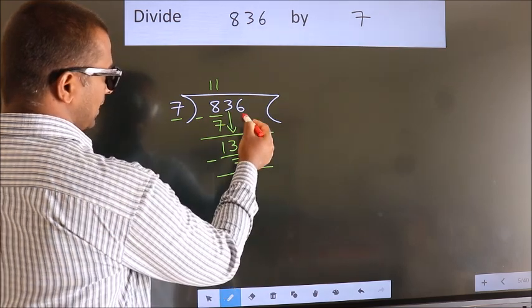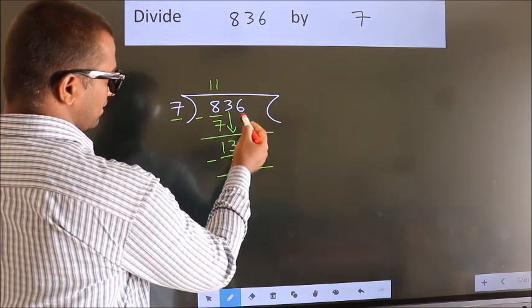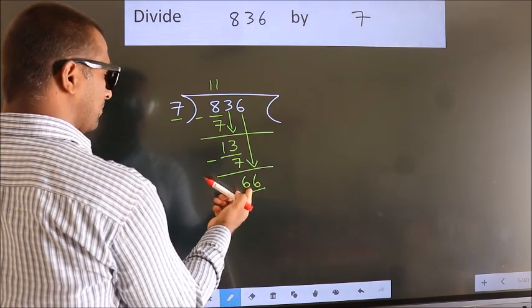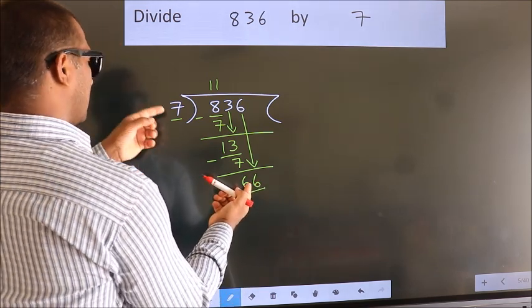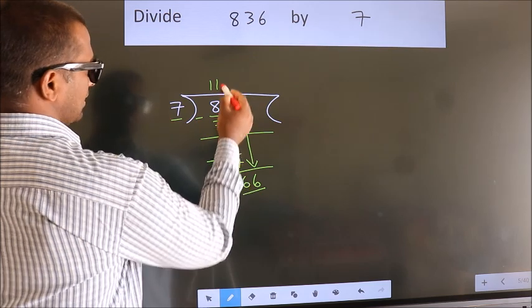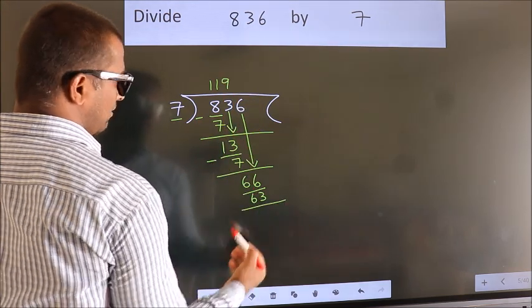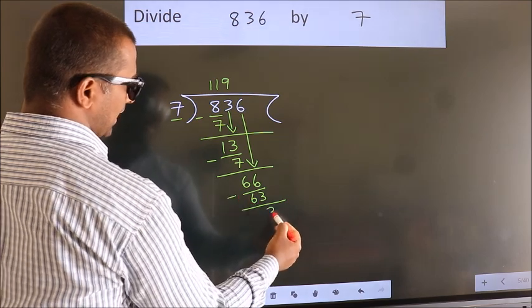After this, bring down the beside number. So 6 down. So 66. A number close to 66 in 7 table is 7 nines 63. Now we subtract. We get 3.